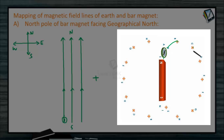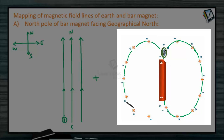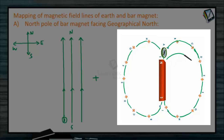This gives us the mapping of magnetic field lines purely for the bar magnet. For the bar magnet, the lines are directed from north to south pole of the bar magnet. In this direction, if you trace with the compass needle, it is marked from north pole of the bar magnet to the south pole of the bar magnet.